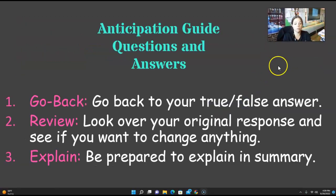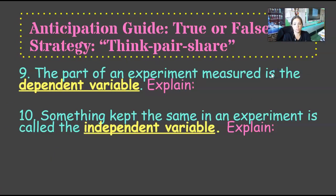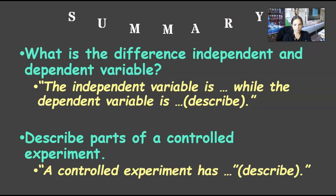We're going to flip back to two and answer in our anticipation card. The part of the experiment measured is dependent. Absolutely true. The independent changes. That should be in your explanation. Ten, something kept the same in the experiment, it's called the independent variable. That's your control group or your control variable.